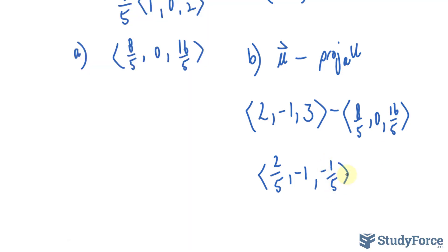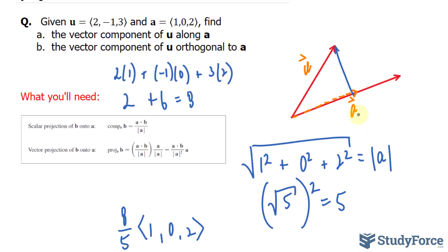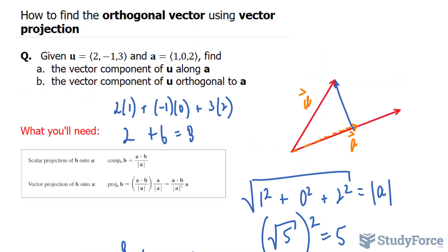These are the x, y, and z components of this vector drawn in blue. And there you have it. That is how to find the orthogonal vector using vector projection.